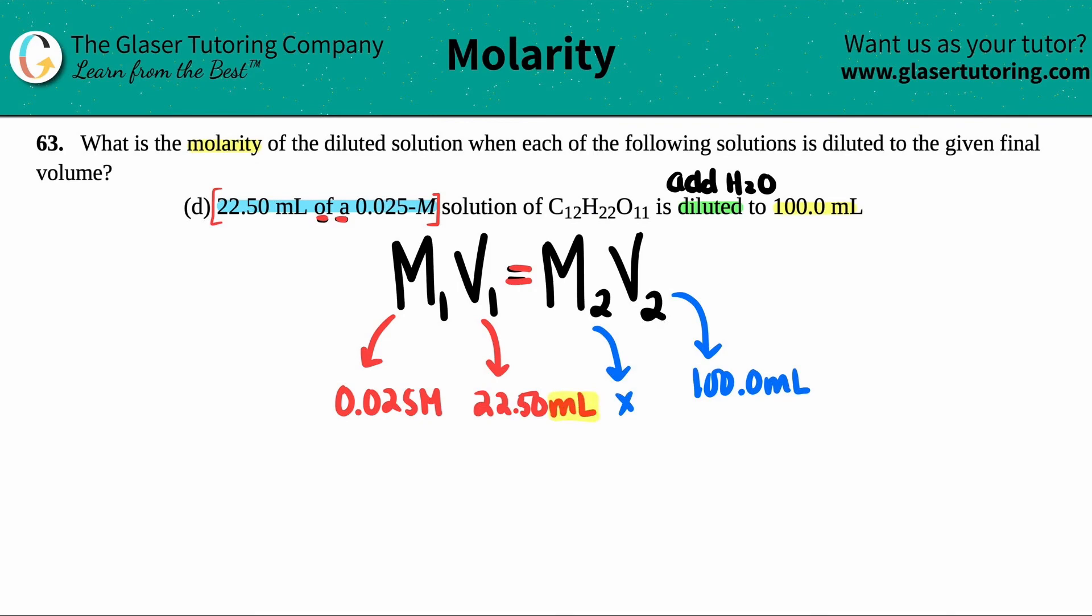The good thing with the dilution formula is that it doesn't matter what unit you have for your volumes—they just have to match. You could have liter and liter, milliliter with milliliter, or any other types of prefix with the liter. Just know that you don't have to have it in liters. But remember the other formula we were working with, molarity equals moles over liter? This has to be in liters. You can't put mL in there.